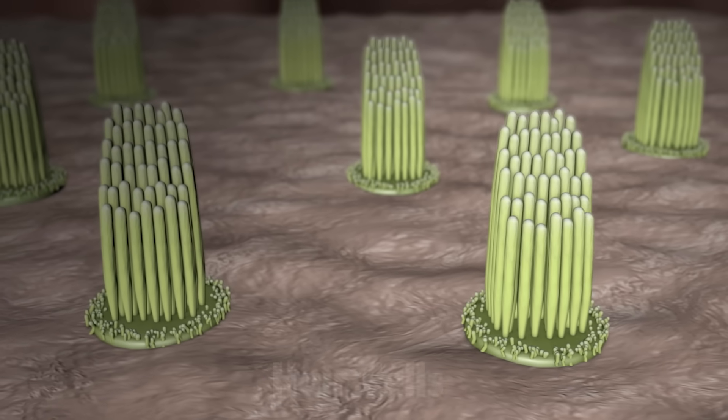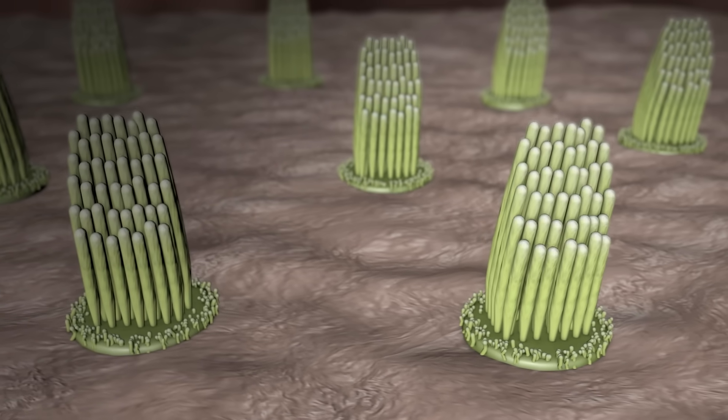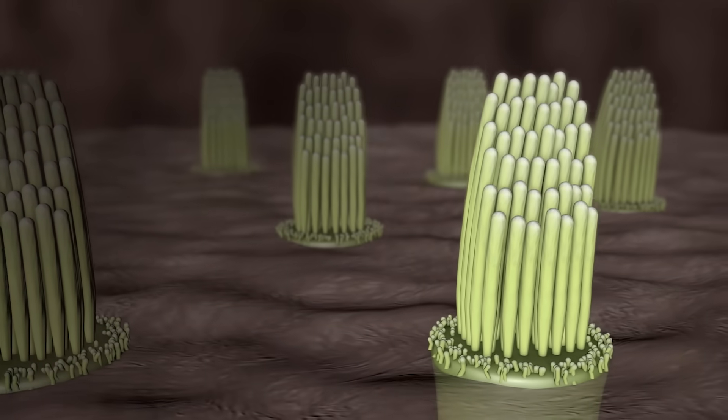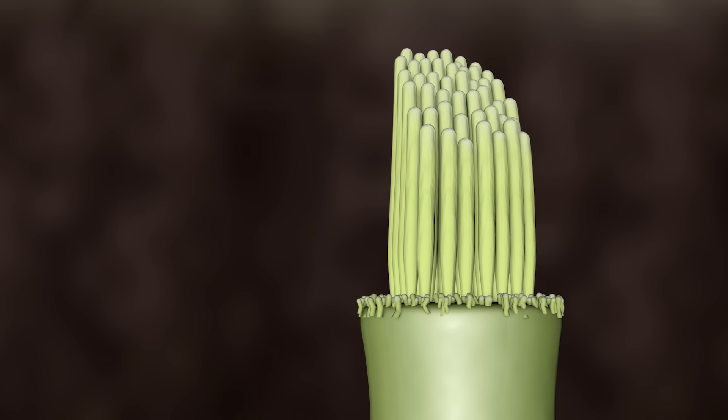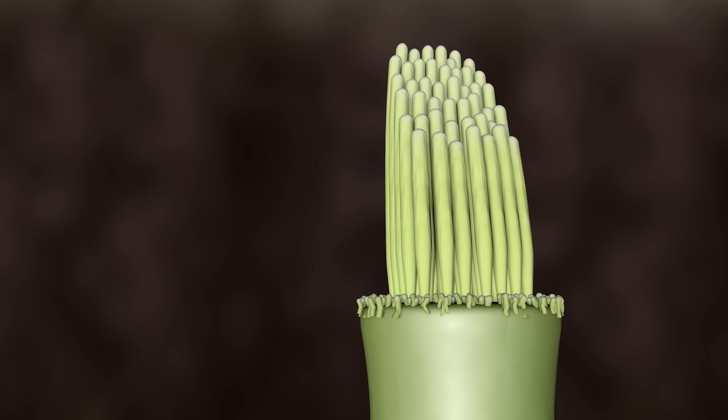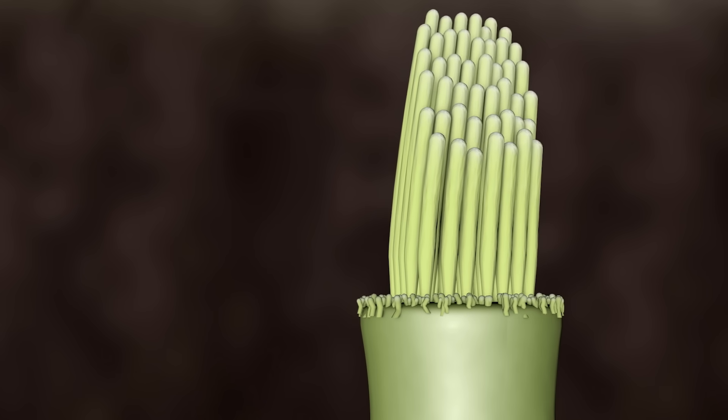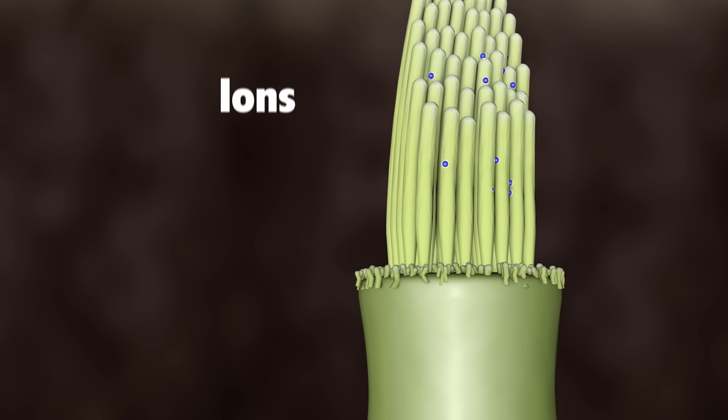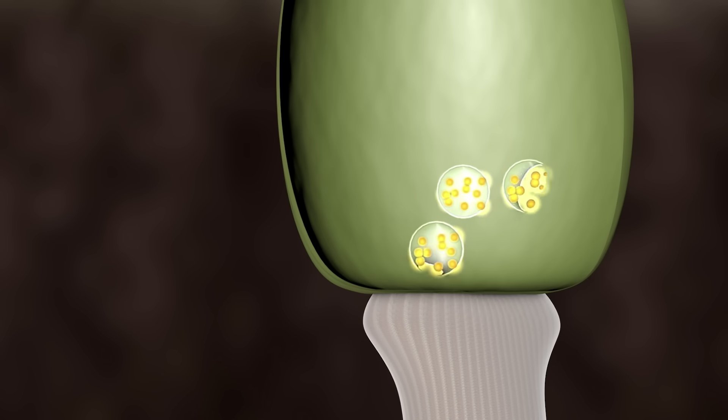The hair cells inside the cochlea ride these waves, and the hair bundles are moved. The hair bundle on top of the hair cell turns these movements into electrical signals. As the hair bundles are moved, ions rush into the top of the hair cells, causing the release of chemicals at the bottom of the hair cells.